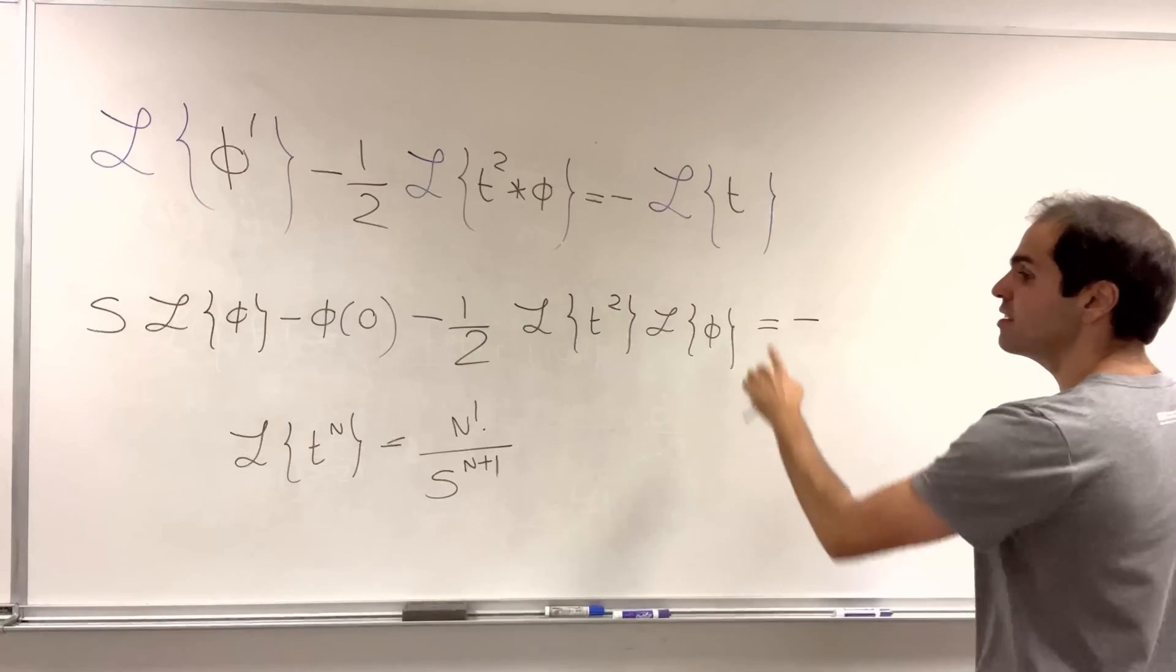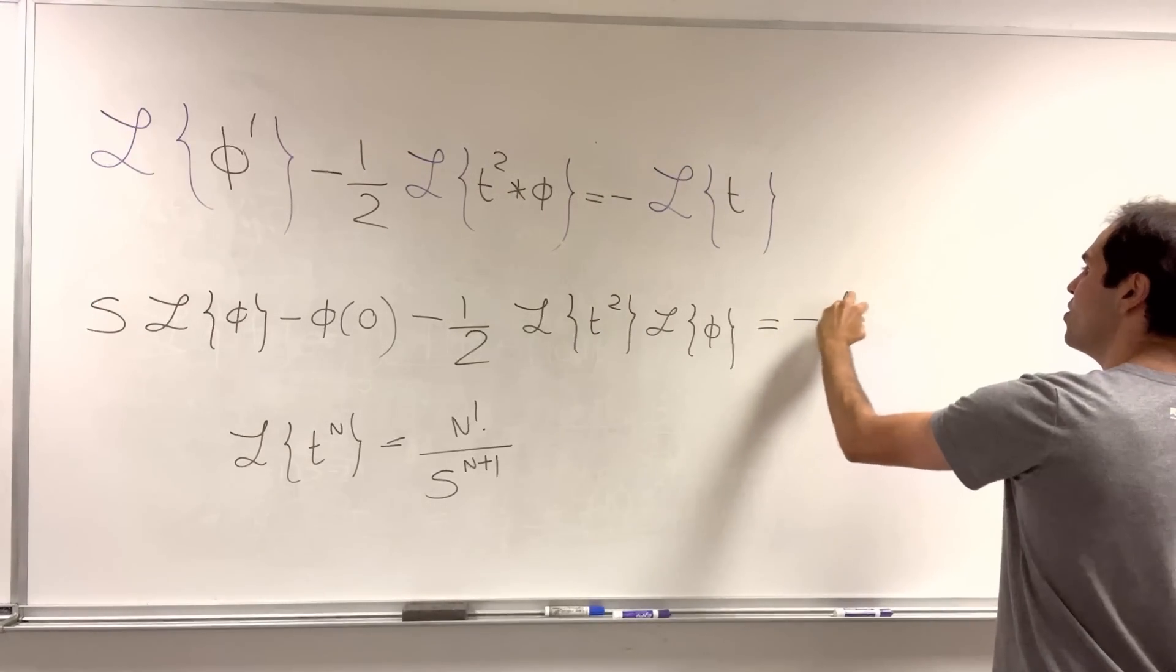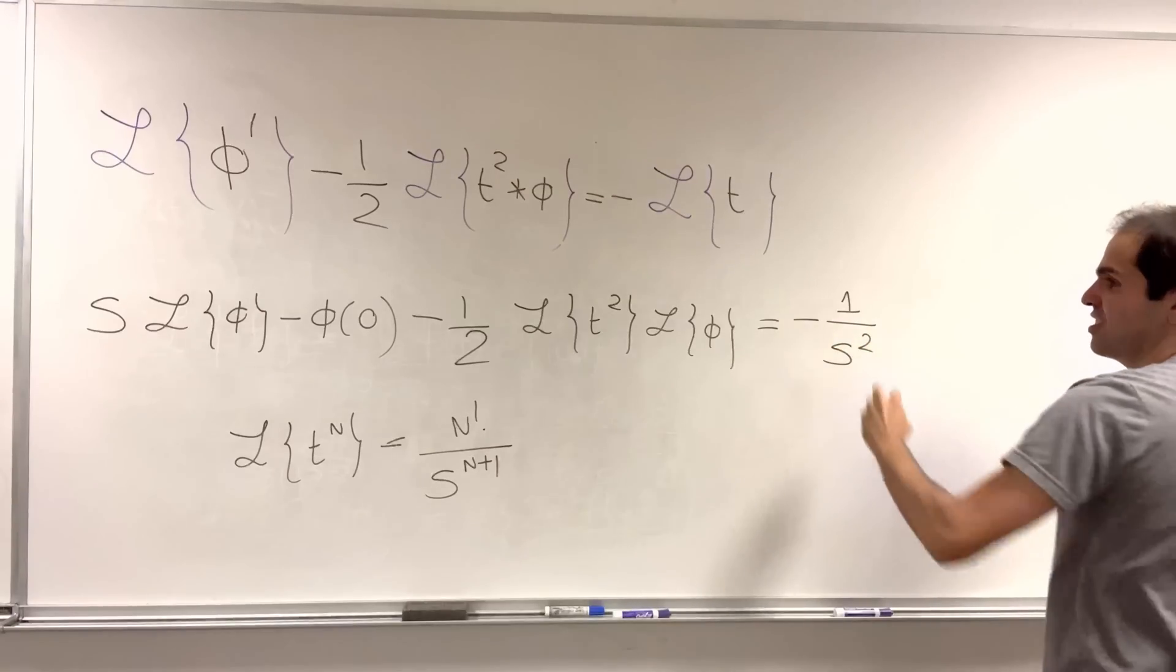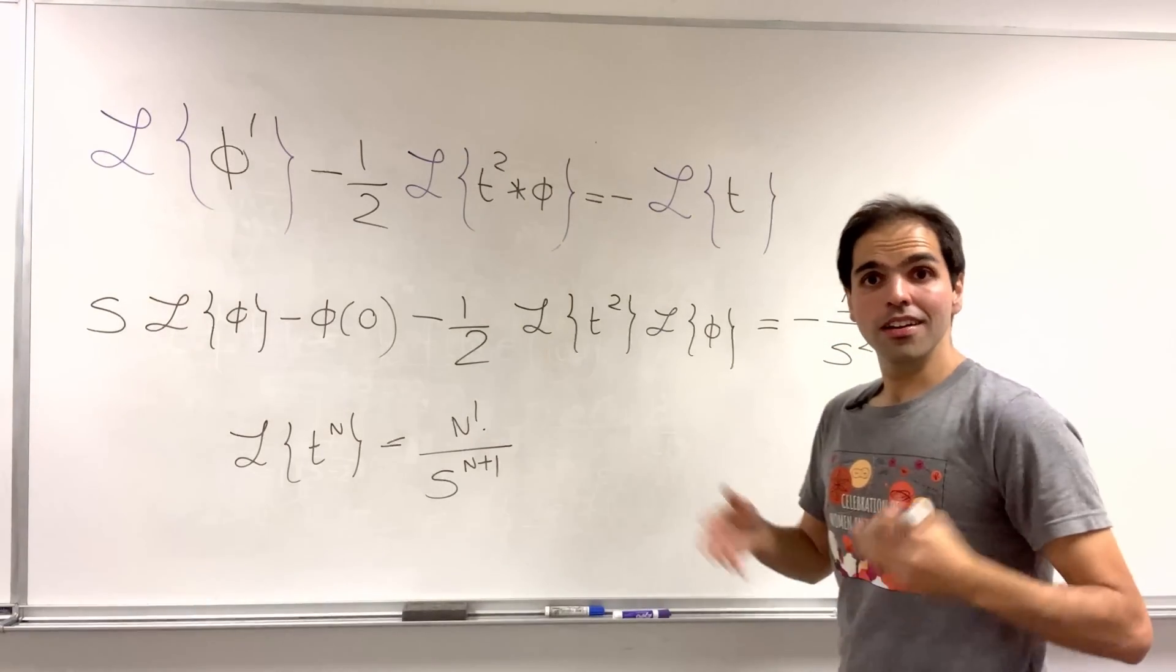So, here minus one factorial, which is one, over s squared. Good.